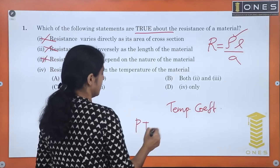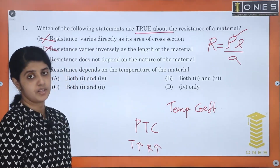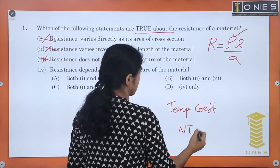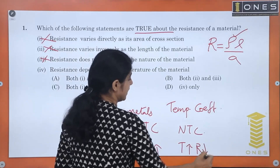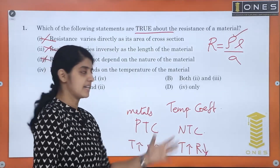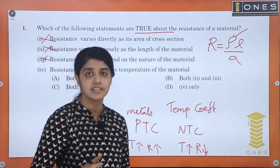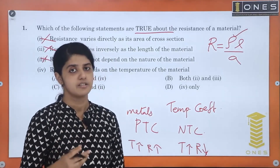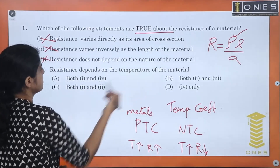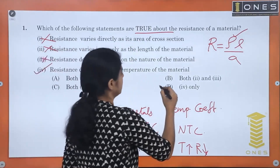For positive temperature coefficient, as temperature increases, resistance increases — that is why metals fall in this category. For negative temperature coefficient, as temperature increases, resistance decreases — semiconductors and electrolytes are here. For negligible temperature coefficient, resistance is approximately zero change with temperature. So the last statement — resistance depends on temperature — is correct. The answer is only option 4.